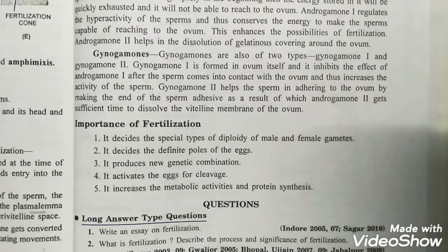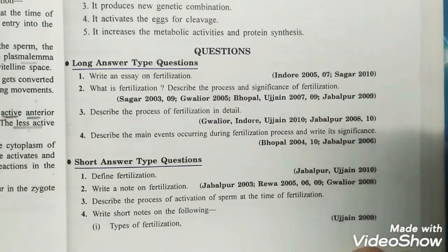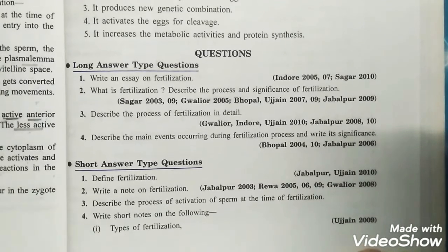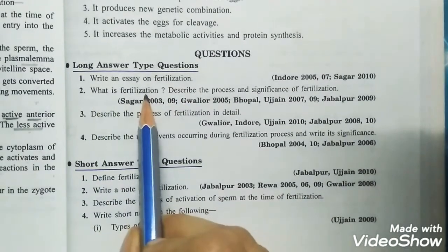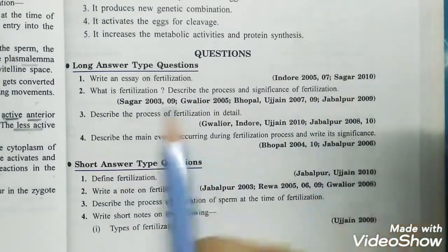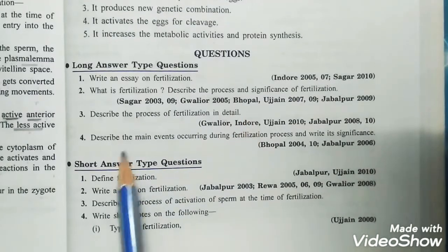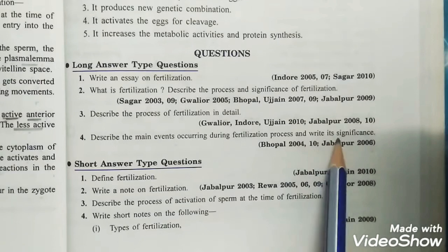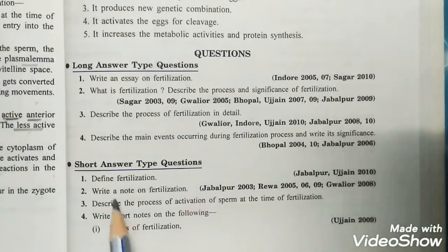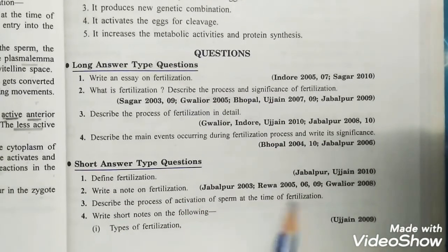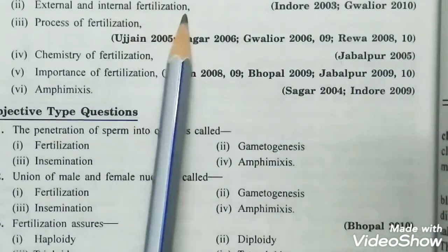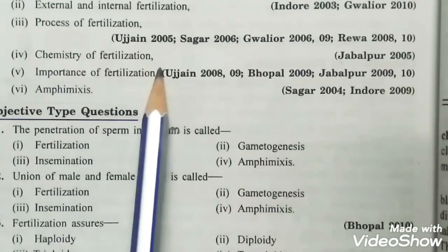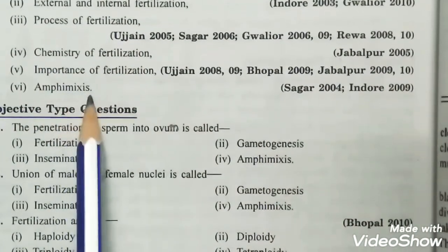That's all about fertilization content. Now we will see some practice questions. Long answer type questions include: write an essay on fertilization, describe the process and significance of fertilization, describe the process in detail, and describe the main events during fertilization. Short answer type questions include: define fertilization, write a note on activation of sperm, write short notes on types of fertilization, chemistry of fertilization, importance of fertilization, and amphimixis.